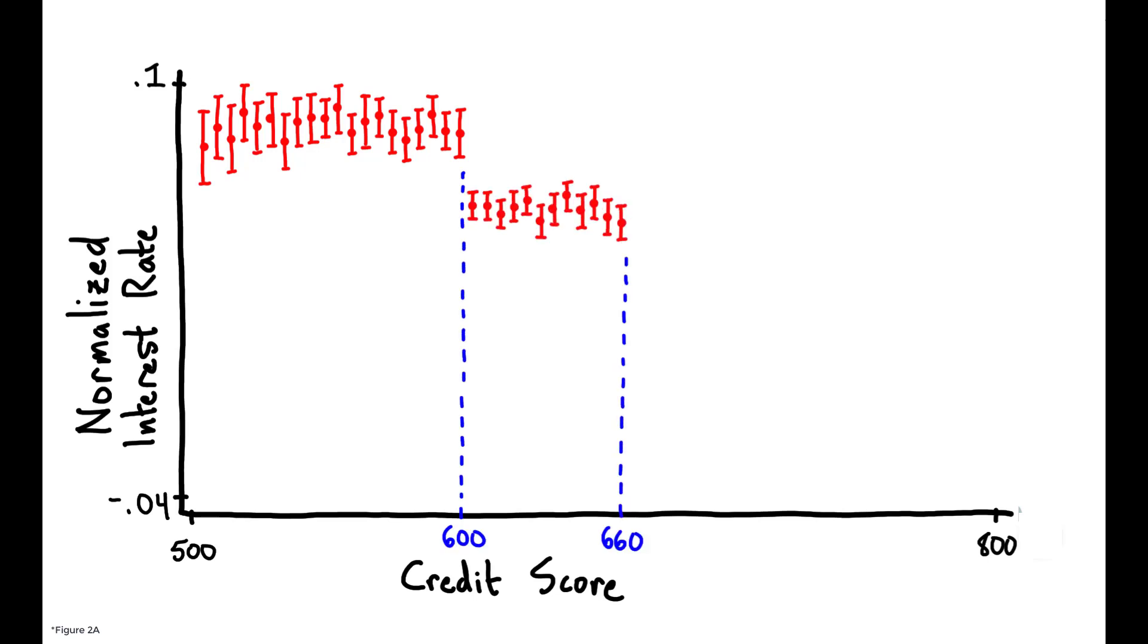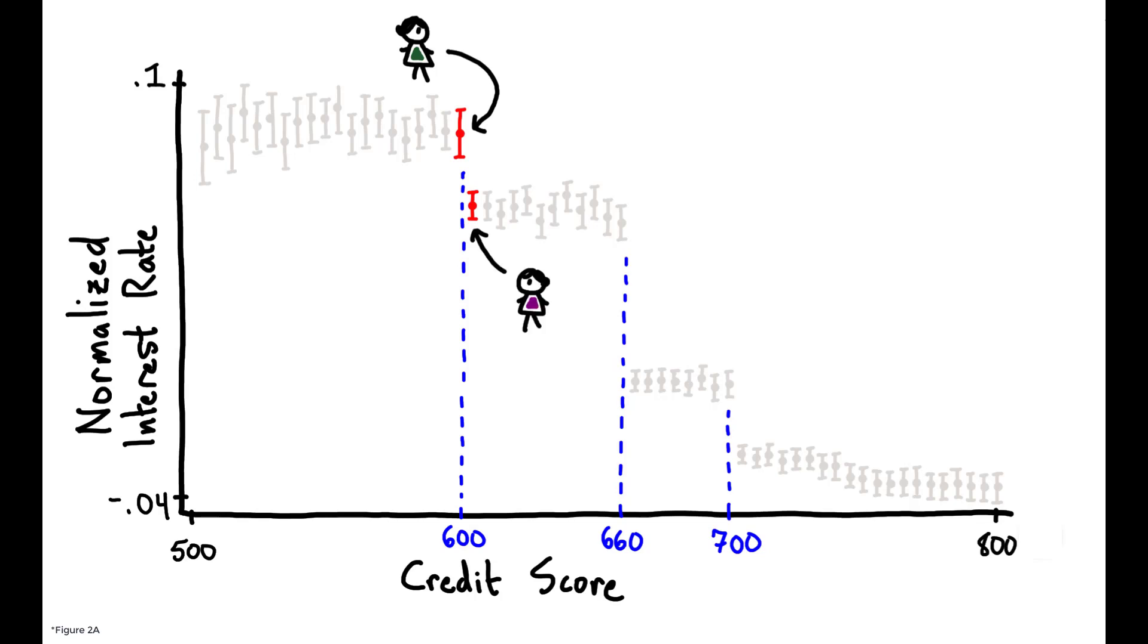600, 660, and 700. This means, for example, that a borrower with a credit score of 599 is offered an interest rate that is two and a half percentage points higher than an equivalent borrower whose credit score is just one point higher at 600.